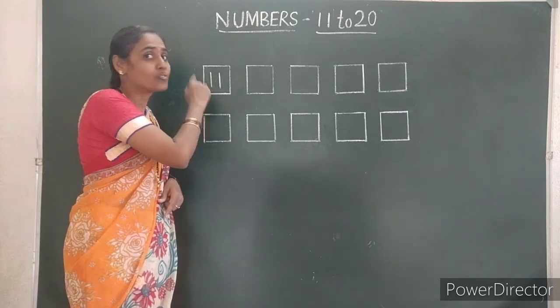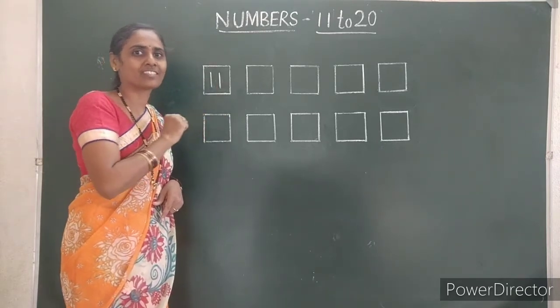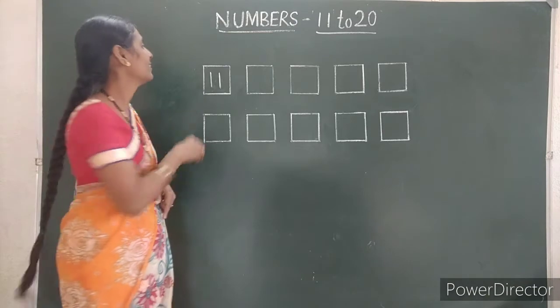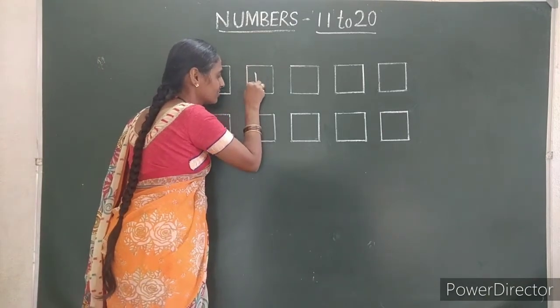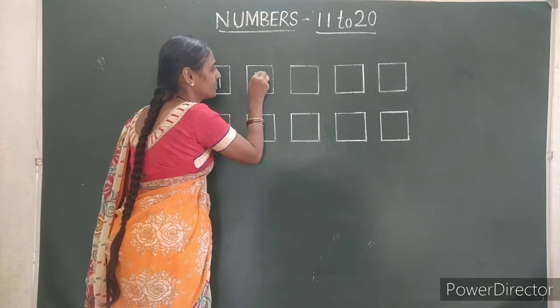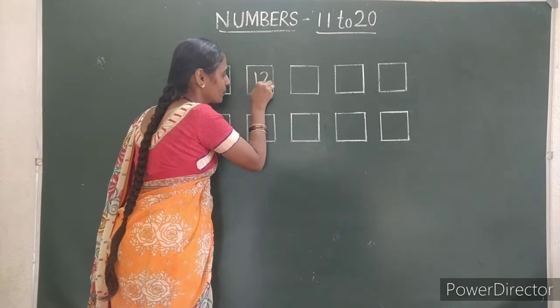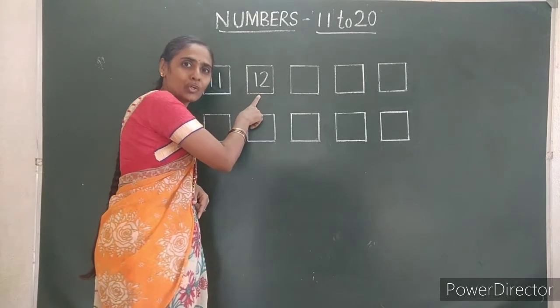After 11, which number comes? 12. First, write 1. Then, 2. 12.